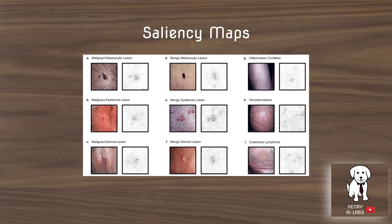These are the saliency maps, another common practice in computer vision to highlight what the CNN is looking at to make its prediction. It's encouraging because the network is accurately looking at the skin lesion rather than arbitrary parts of the image.